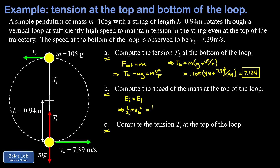At the top we have kinetic energy one-half m v_top squared plus gravitational potential energy mgy, where the y-coordinate is twice the string length, so 2L. Canceling mass and multiplying both sides by 2 gives: v_b squared equals v_t squared plus 4gL. Solving for the speed at the top, we subtract 4gL from both sides and take the square root.